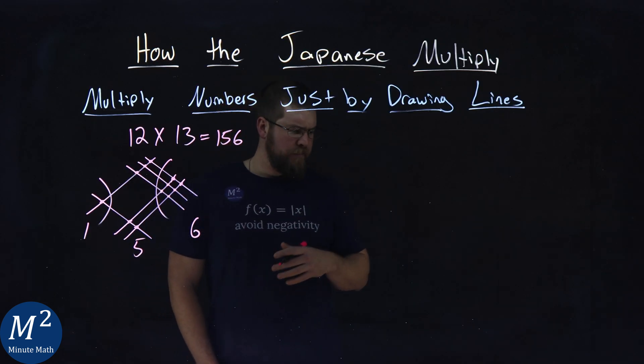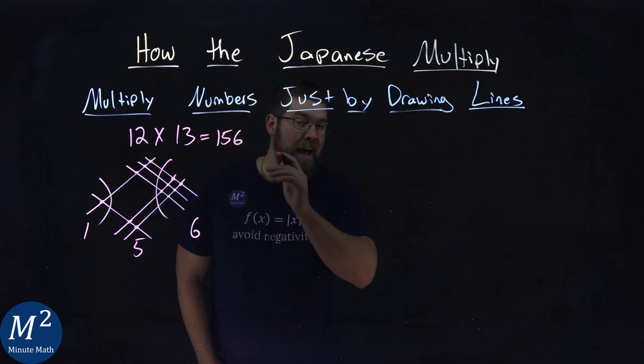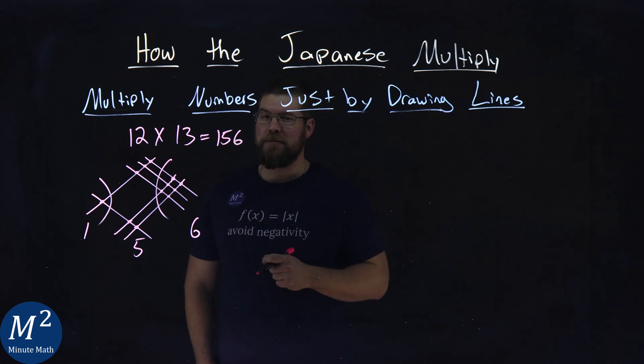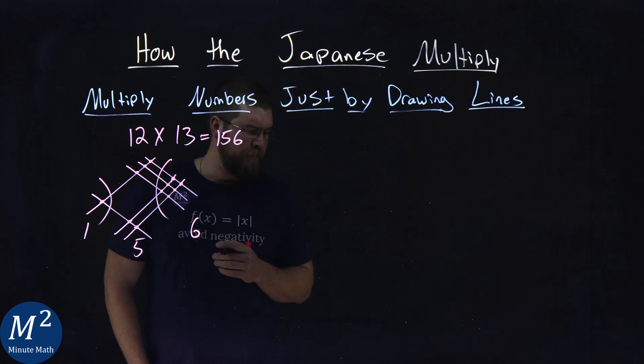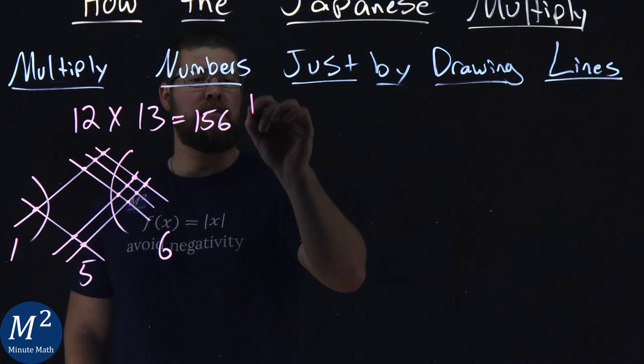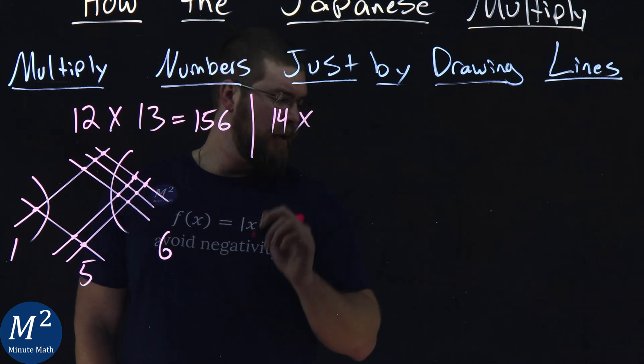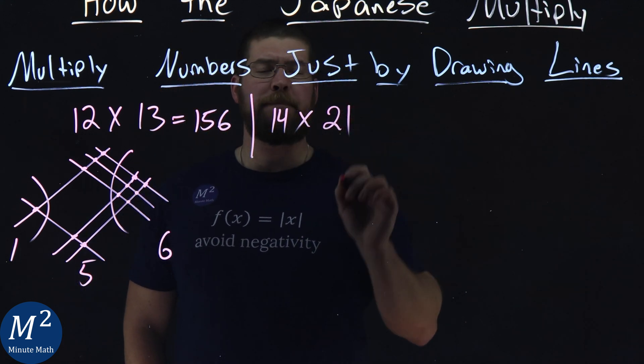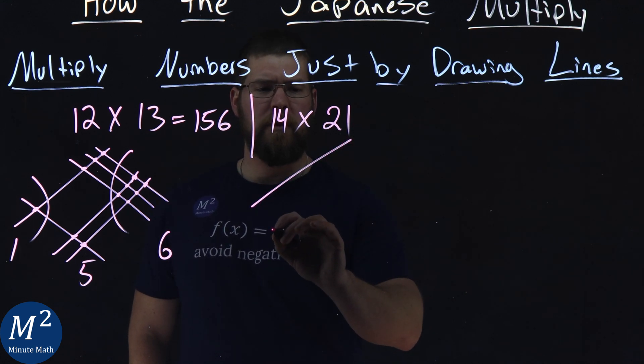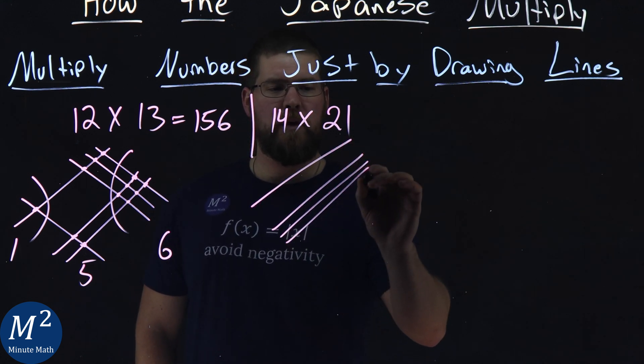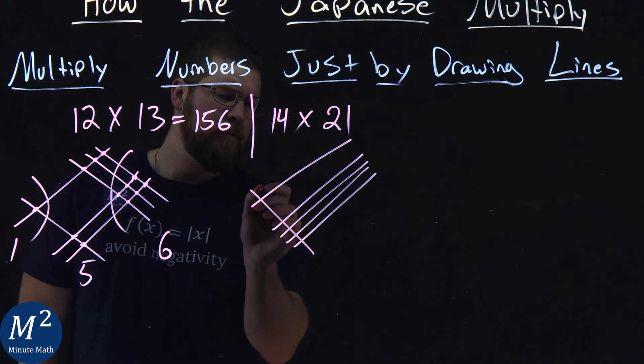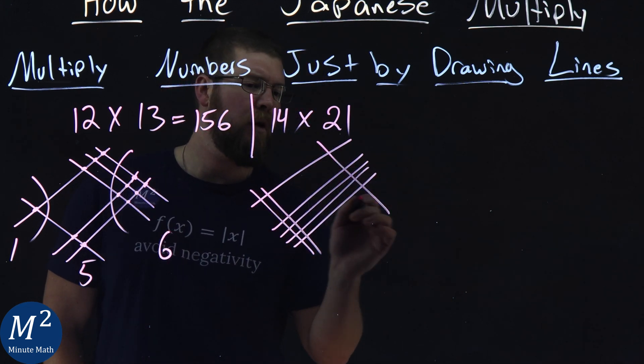Well, let's go try it again with something a little more difficult. And stay tuned for the end. We're going to show how we also do it with algebraic expressions. Okay? So, let's go do a more difficult one right here. What about 14 times 21? All right? Same idea. One line here, then four. One, two, three, four. Now, 21, we have two here. One, two, then a one.